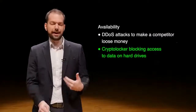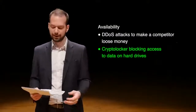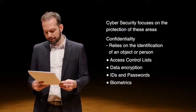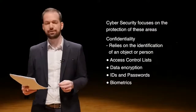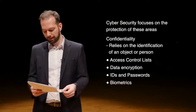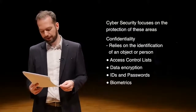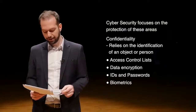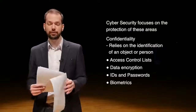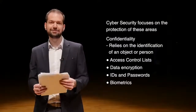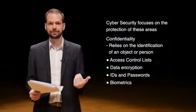Crypto locker blocking access is an attack on availability — you want to access your files but you can't. The best way around that is to keep a backup of all data that's important to you. Confidentiality relies on identifying what needs to be kept confidential. We can keep it confidential through access control lists — restricting who accesses the information — through data encryption so others can't access it without the key, and through IDs, passwords, and biometrics. Have you actively used encryption on your files? Probably not — they're likely unencrypted and anyone with access to your computer can probably get your sensitive data.